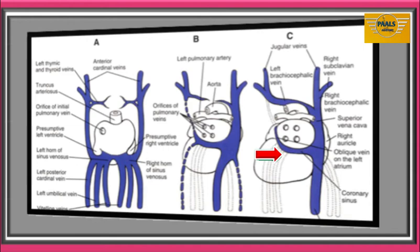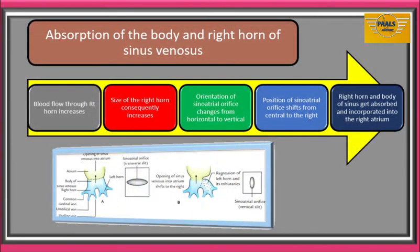The left horn of sinus venosus will then regress to form the coronary sinus, opening into the right atrium. With the increase in blood flow through the right horn of the sinus venosus as a result of the left-to-right shunt, the right horn will also increase in size. After formation of the interatrial septum, the right horn and body of sinus venosus will be absorbed and incorporated into the right atrium.